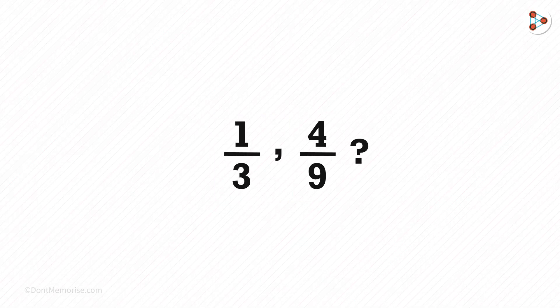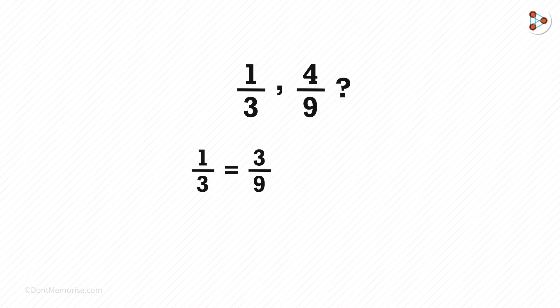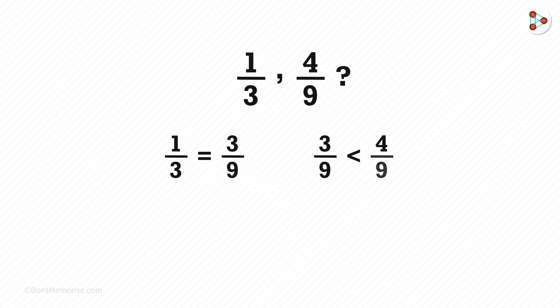One method to compare these two is to make the denominators the same. You can easily say that 3 over 9 is less than 4 over 9. Hence we can say that 1 over 3 is less than 4 over 9.